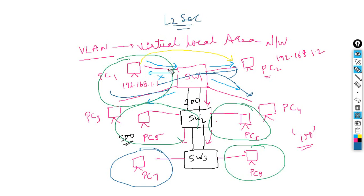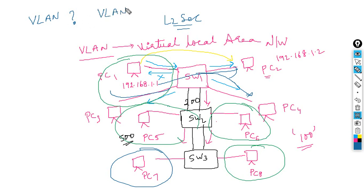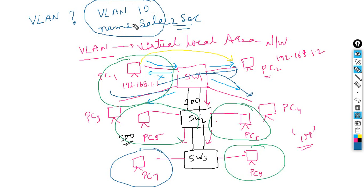To create a VLAN on a Cisco switch, go to global configuration mode and enter the VLAN number, for example 'vlan 10'. Then give it a name, such as 'name sale' for the sales department. These two commands are enough to create a VLAN on the switch.